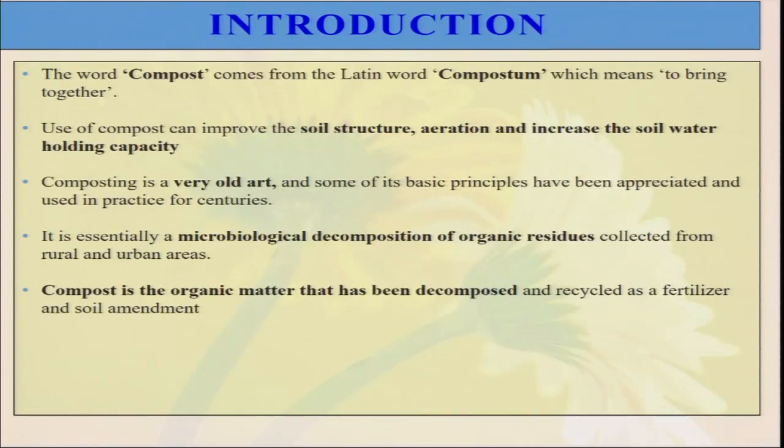Compost also plays a role in soil water holding capacity. The water holding capacity of a soil determines how crop growth will be there if there is no rain or no irrigation facility. Soil with very good water holding capacity will provide more yield. Whenever we apply organic manure or compost in our field, they have a very high surface area, so apart from holding water, they also absorb different types of nutrients, minimizing nutrient loss from the soil.